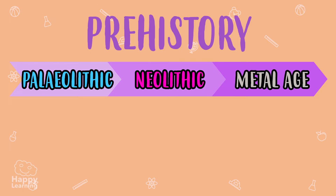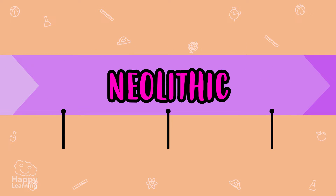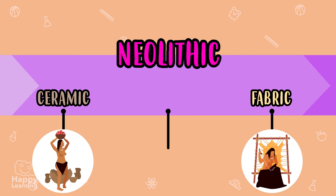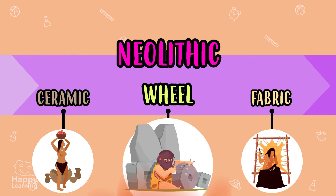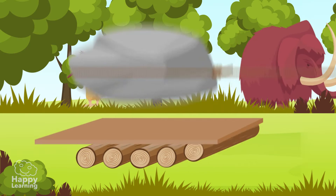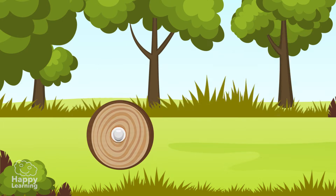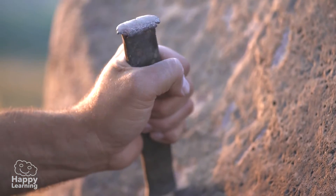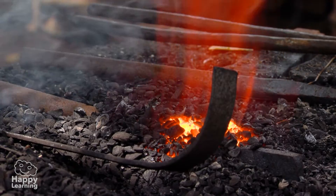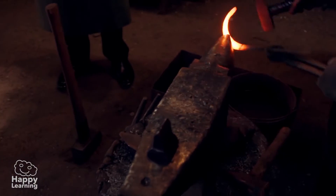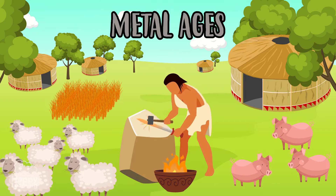During the Neolithic era, many interesting things were invented, such as ceramic and fabric. But the most important invention was the wheel. Everything became so easy for men and women in the Neolithic, especially when they started using metals. This is the point where the Neolithic ended and a new era in prehistory commenced: the Metal Ages.